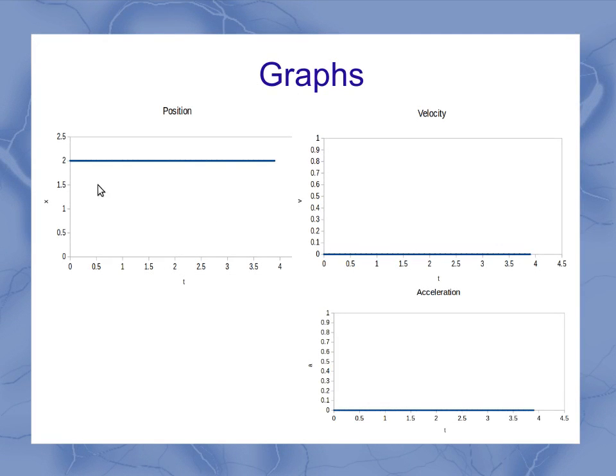Graphically, my position was just two meters, didn't change with time. And the slope of that graph is zero, so my velocity was always zero. And the slope of zero is just zero, so again, my acceleration is zero.